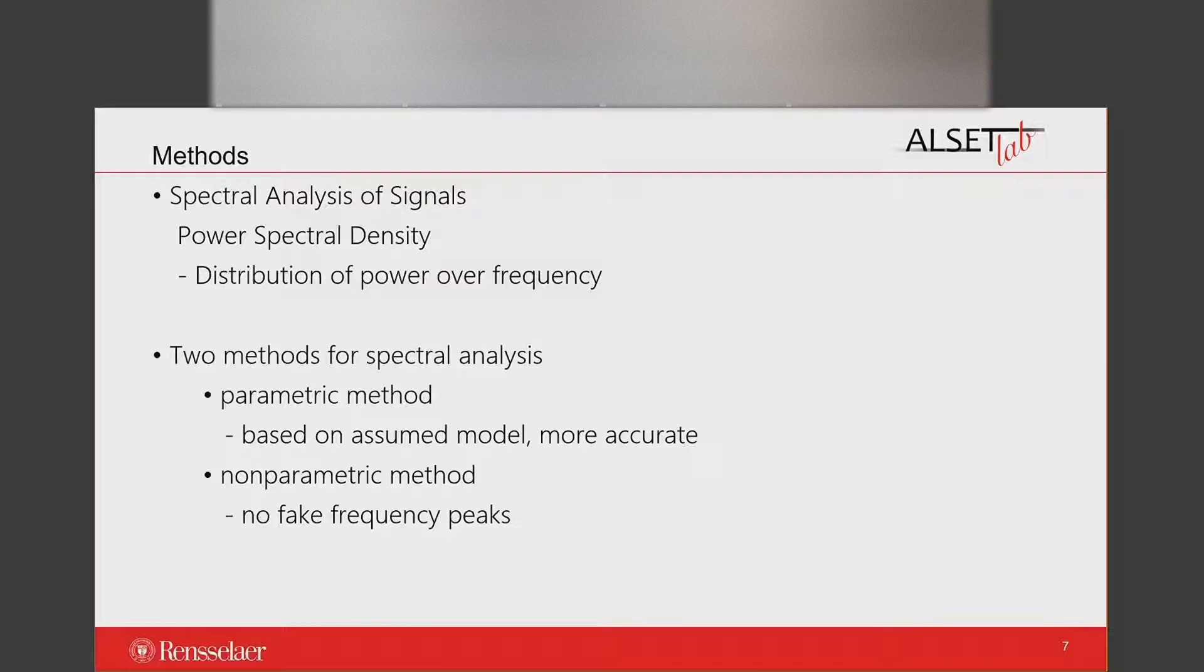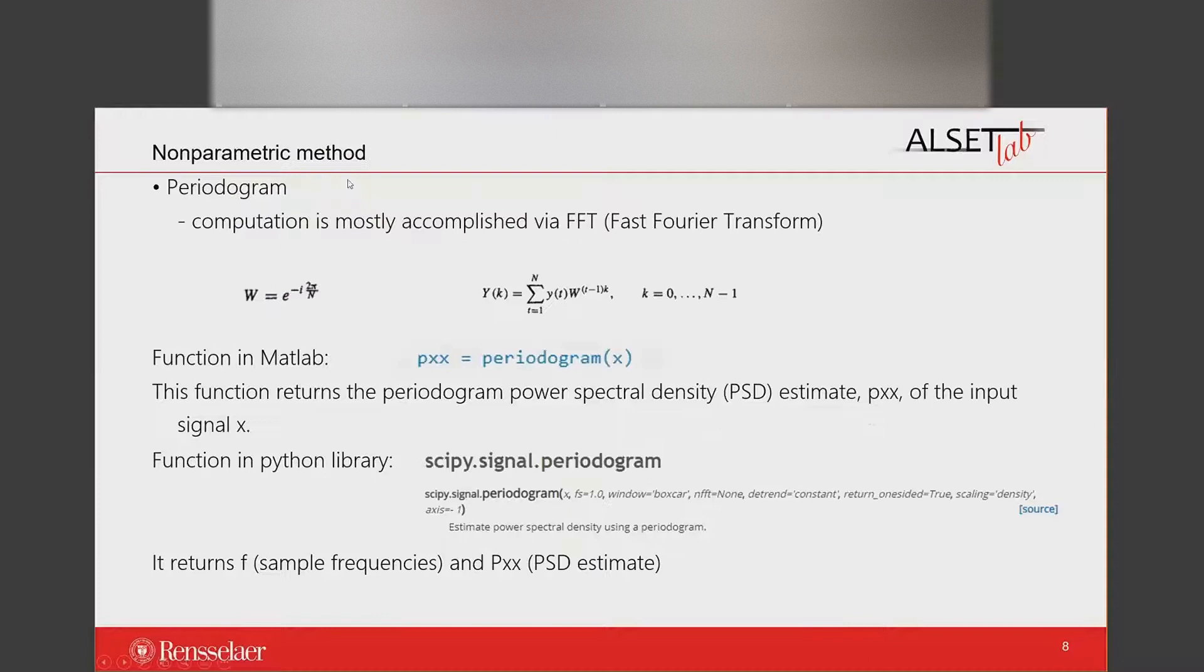Comparing these two methods, the difference is that the parametric method postulates that the signal satisfies a generating model with a known functional form. Since the model is close to reality, the estimation will be more accurate. But the wrong hypothetical model will generate biased signal trends, producing fake frequency peaks. The nonparametric method is also very useful when dealing with signals with little information provided. I will start with the nonparametric method.